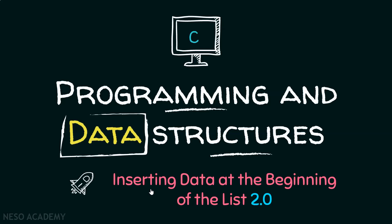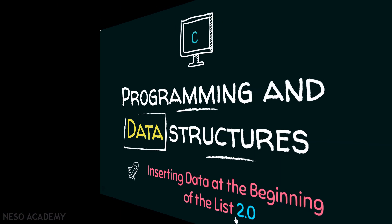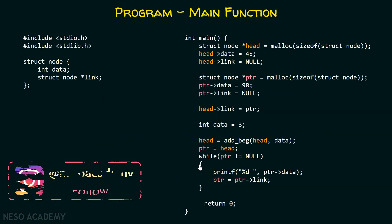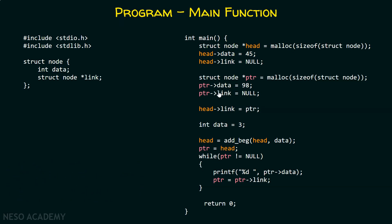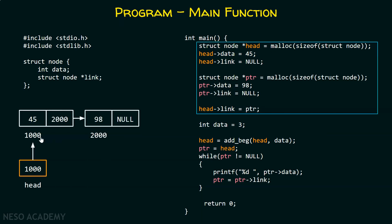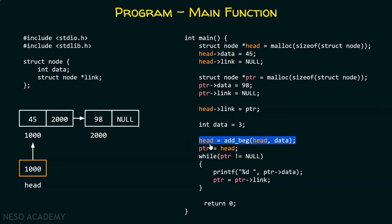In this presentation, we will see version 2.0 of inserting the data at the beginning of the linked list. This main function is similar to the main function which we have already seen in the previous lectures. This block of code will create the linked list which consists of two nodes, where the head pointer is pointing to the first node of the list. After that, we have this line of code: head equal to add_back(head, data).